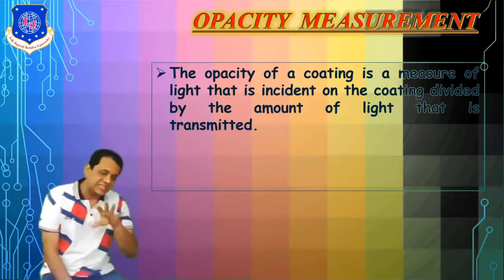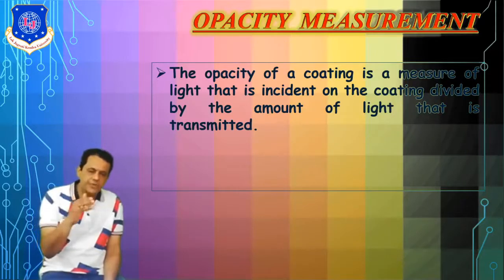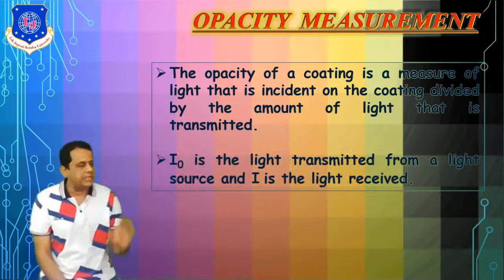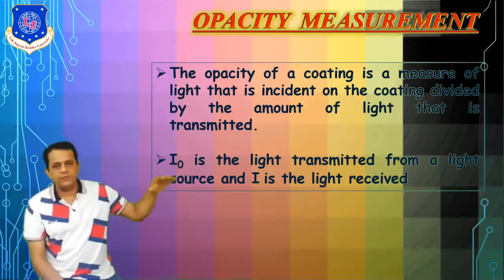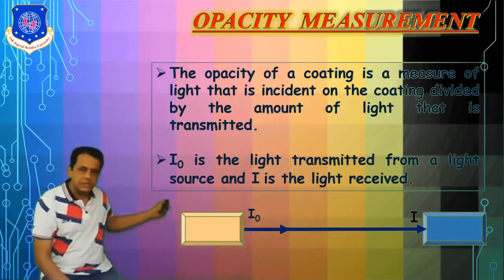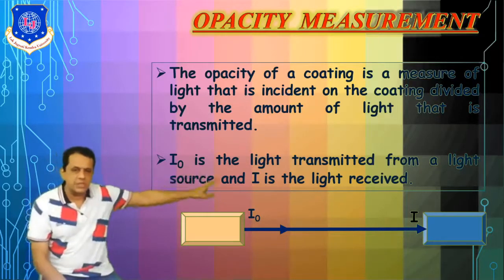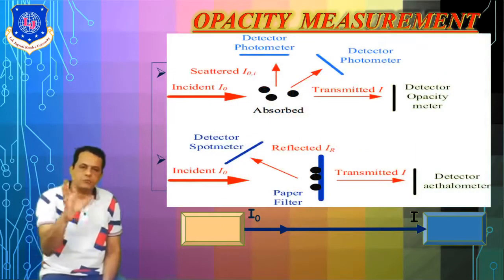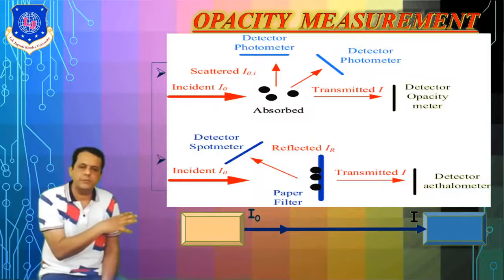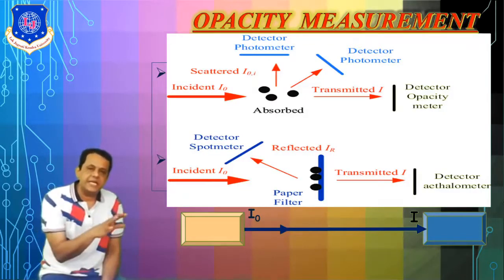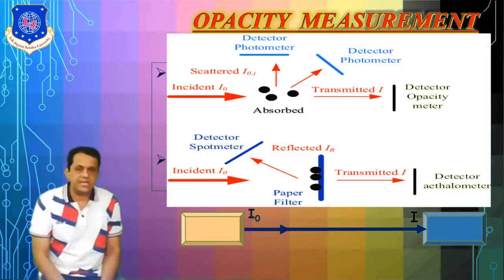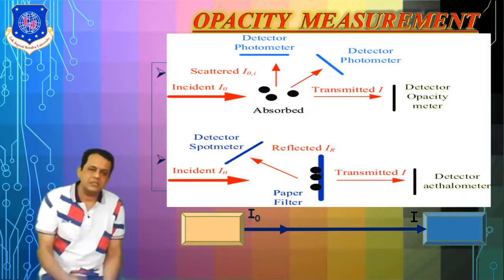For a coating material, opacity is the light incident on the coating divided by the light that is transmitted — there is always a transmitter and a receiver. Let us say I₀ is the light transmitted from the source and I is the received light. In the visual diagram, the yellow element is the source and the blue one is the receiver. The incident light is I₀, and in some particles it may be absorbed. The transmitted light is then detected by the opacity meter or photometer.